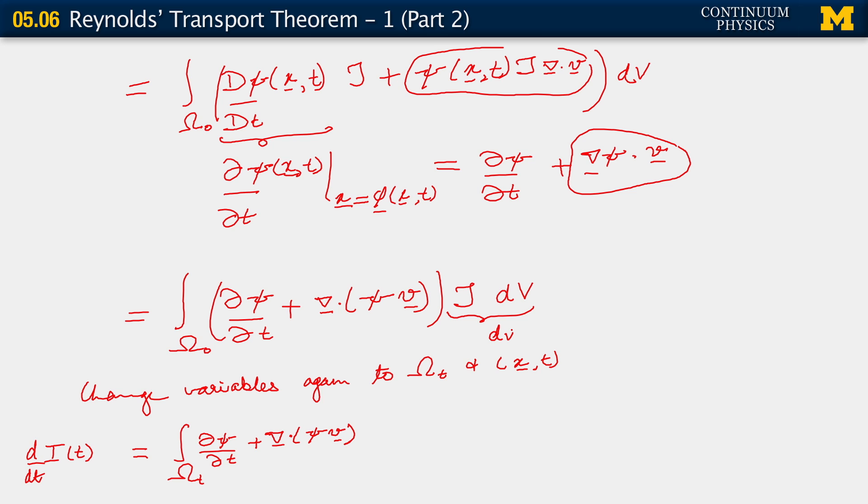Now, J d capital V becomes d little v, because J is the ratio of the current to the initial elemental volumes, and dV is the initial or reference elemental volume. So that product gives us the current or deformed elemental volume, d little v. So all of this becomes integral d little v, and we're essentially done.